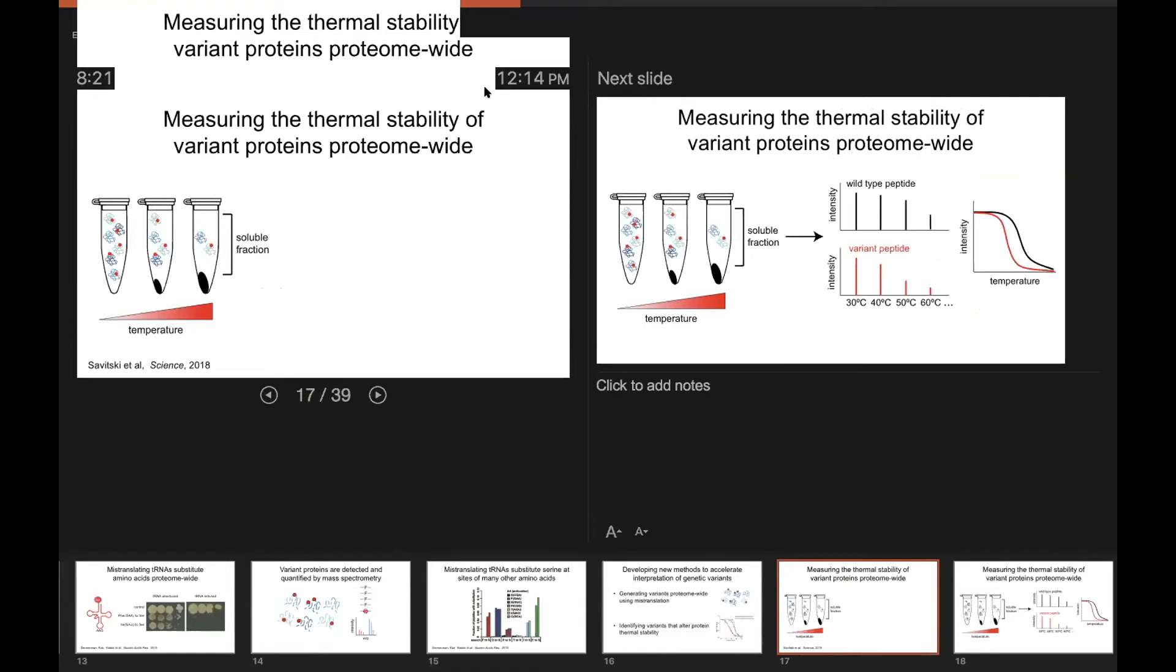The approach we use to measure protein thermal stability is the thermoproteome profiling method developed by the Savitsky lab. And the way this method works is that you can take a protein lysate or cells and treat it at increasing temperature. And all proteins, as they are heated, will eventually denature and misfold. And so as the proteome denatures and misfolds, the proteins will fall out of solution. And so if you use mass spectrometry now to measure the concentration of each protein in the soluble fraction at each different temperature, you can monitor this unfolding process for each protein and essentially draw a melting curve for every protein.